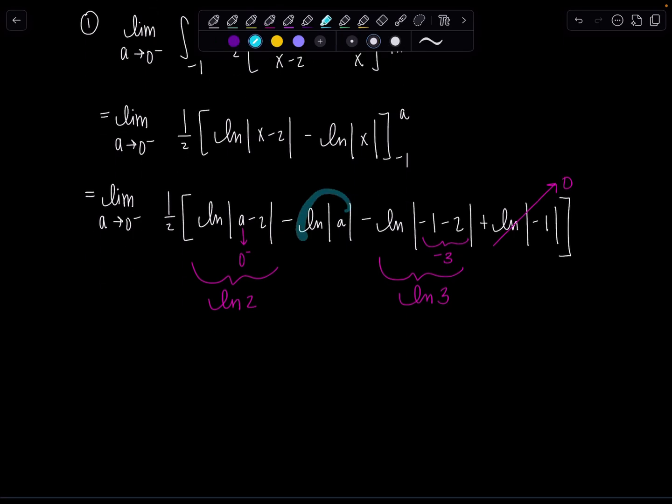So we've got ln absolute value of a. So yeah, a is approaching zero from the left. So it's approaching zero from the right. And ln, where is it going? As the input approaches zero from the right, we know it's going to negative infinity. Very good.